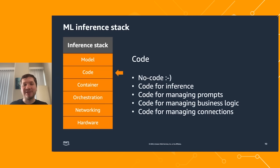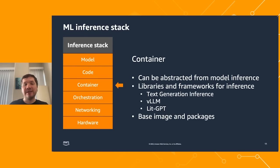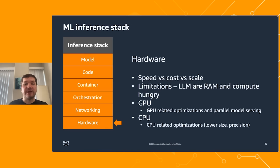On the code level, there are multiple options. One is no code at all, meaning this part is abstracted and you just run your model directly. But if you need to implement code, it's usually for inference itself, managing prompts, handling business logic, or networking connections. On the container level, the main decision is choosing inference libraries — for example, text generation inference from Hugging Face, vLLM, LightGPT, or others — and deciding on base image and packages. On the hardware side, you need to understand what kind of hardware to use and how to balance speed, cost, and scale. Large language models are RAM and compute hungry. Depending on whether you use GPU or CPU, you may need different optimizations. With GPU and extremely large models, you may need parallel model serving, and with CPU, specific optimizations to handle large language models.